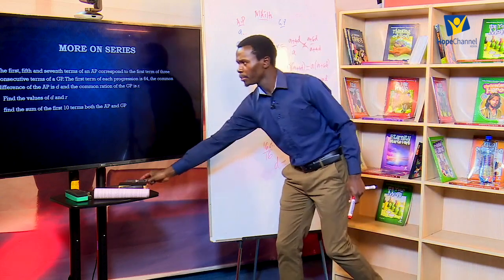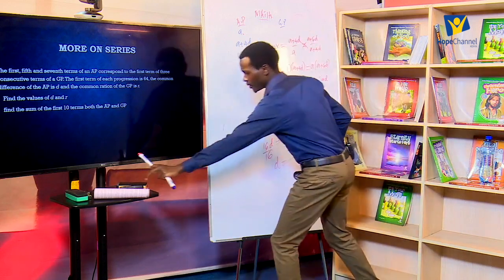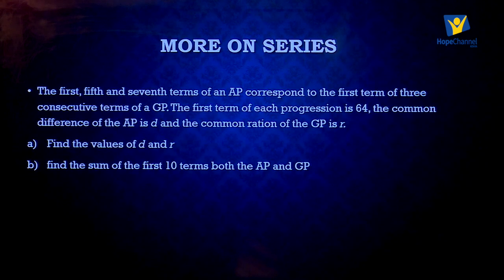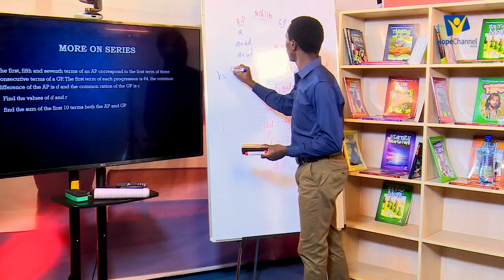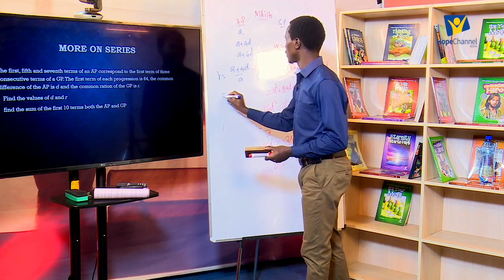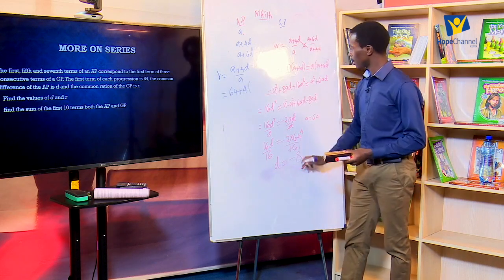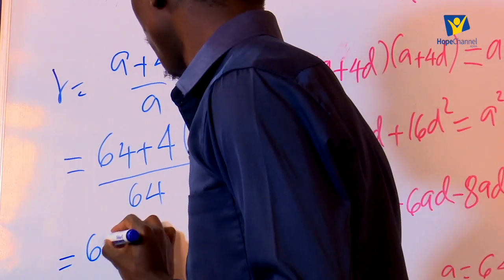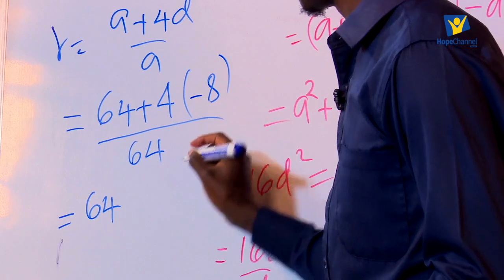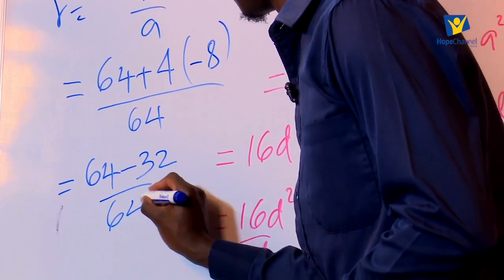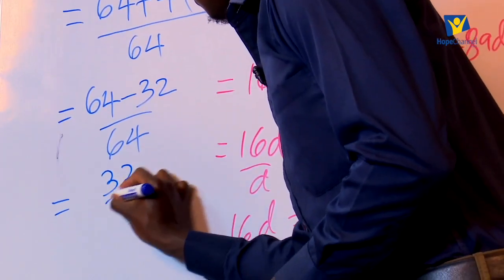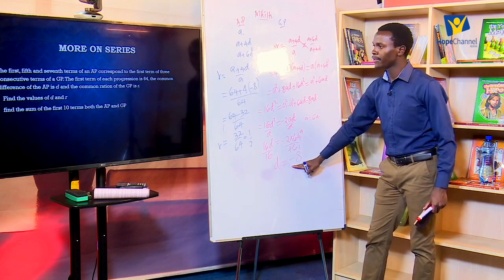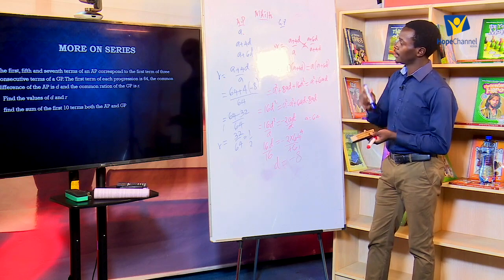After getting d equals negative 8, we find R. The common ratio R equals a plus 4d over a. Substituting: 64 plus 4 times negative 8 over 64 equals 64 minus 32 over 64 equals 32 over 64 equals one half. So the common ratio R equals one half. This was d for the AP and R for the geometric progression.